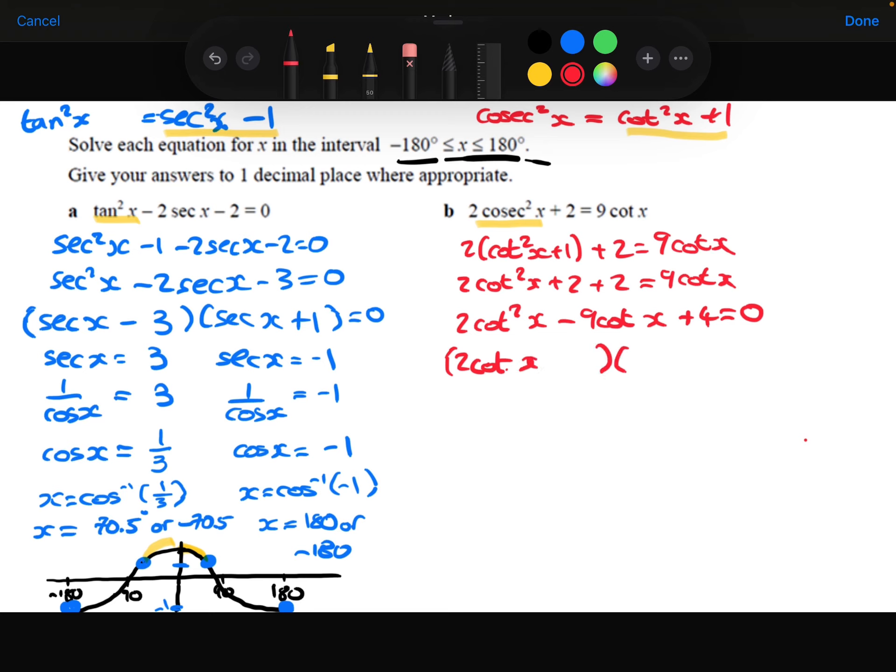So again, it's going to need to be a 2 cot x and a cot x. And then we're going to need a minus 1 and a minus 4 to get the plus 4 on the end. And then the 2 times the minus 4 is minus 8, and then that gives the minus 1 to give the minus 9. So I know that cot x is either equal to 1 half or it's equal to 4.